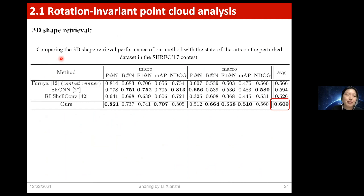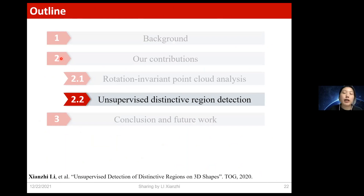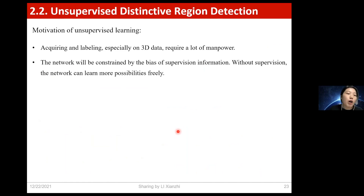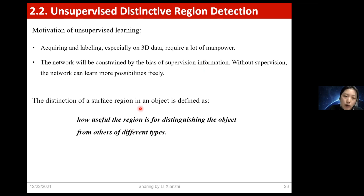Next, let's move to our second contribution: unsupervised distinctive region detection, published in TOG last year. Exploring unsupervised learning is particularly necessary because acquiring and labeling 3D data is very time-consuming. Also, without supervision the network can learn more possibilities freely. Let me give the definition of shape distinction. Formally, the distinction of a surface region in an object is defined as how useful the region is for distinguishing the object from others of different types.